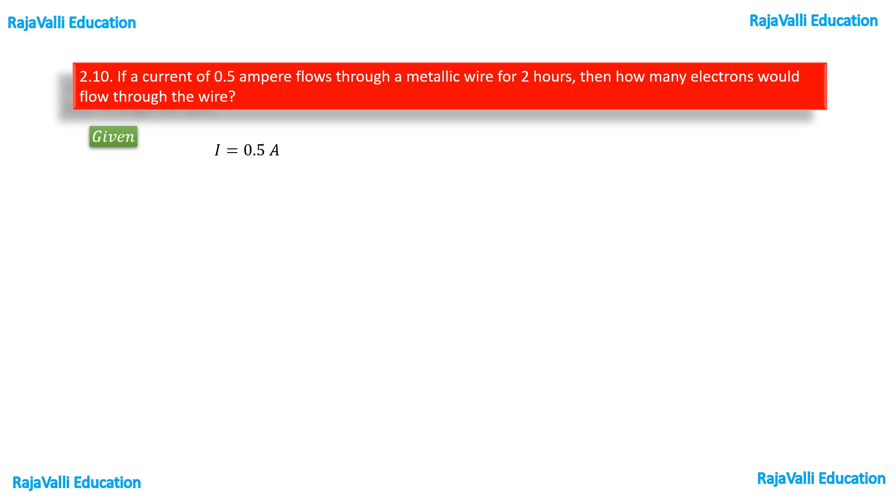The givens are current and time. The current value is 0.5 ampere. Here we can note down the 0.5 value as 1/2, so I is equal to 1/2 ampere. And then time is given in hours. Here we have to convert hours into seconds.